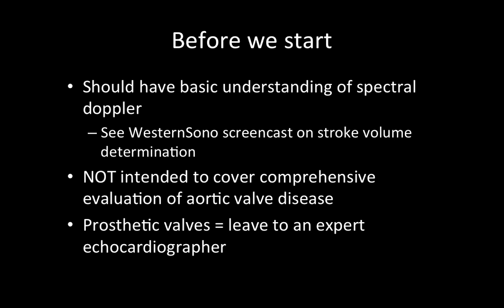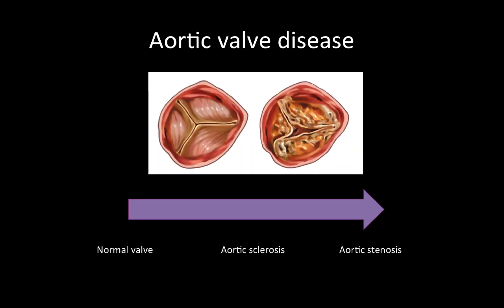Second, this short screencast is evidently not intended to cover a comprehensive evaluation of aortic valve disease. In particular, evaluation of both bioprosthetic and mechanical valves is best left to an expert echocardiographer, given the inherent complexity of that task. Aortic valve disease exists along a continuum, where aortic sclerosis reflects valve thickening without any actual impairment of valve function. Progression to aortic stenosis, on the other hand, reflects impaired valve function, relative obstruction of the left ventricular outflow tract, and the presence of hemodynamically significant gradients across the aortic valve.